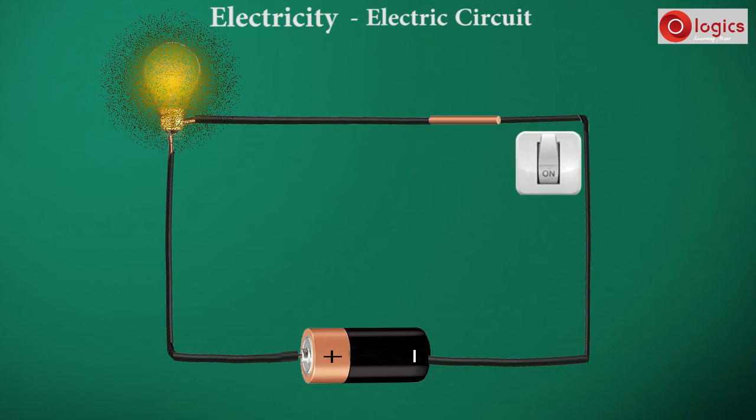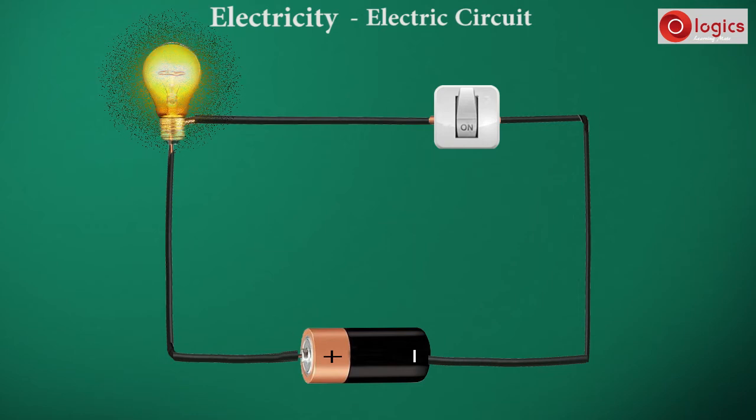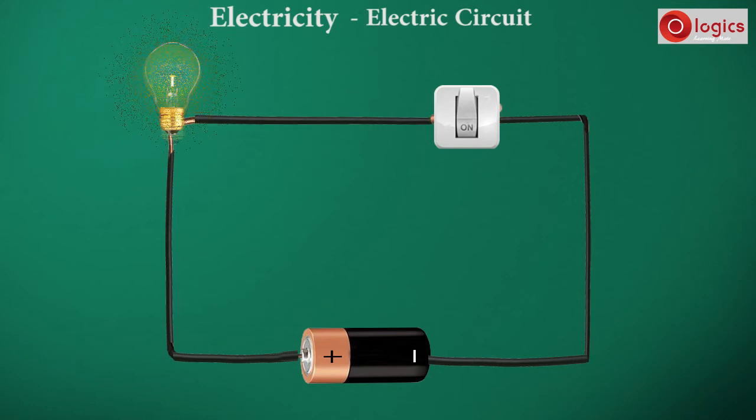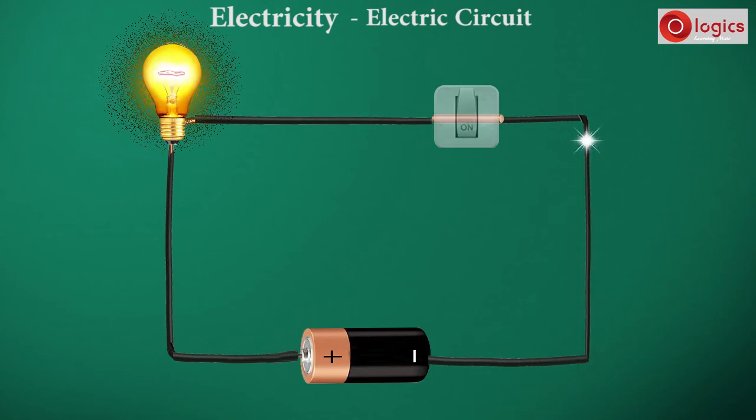Here we arranged this real switch on the circuit. Observe here, when the switch is off, the circuit is open, so electricity flow stops. When the switch is on, the circuit is closed, so electricity flow starts.